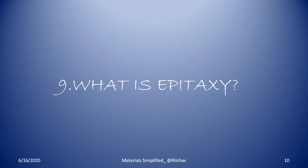What is epitaxy? Epitaxy is the growth of a single crystal over a substrate. There are two types: homoepitaxy and heteroepitaxy. You take a substrate and grow a crystal of a preferred orientation on it — that is epitaxy. For the classification: if the crystal being grown on the substrate and the substrate itself are of the same material, it is homoepitaxy. If they are of different materials, it is heteroepitaxy.